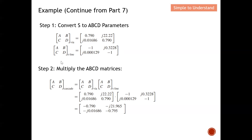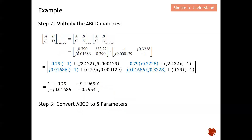In this video, I'm going to continue with Step 2, which is to multiply the ABCD parameters. I have the via and the transmission line, and to calculate the overall cascade circuit, I need to multiply the 2×2 matrix of the via by the 2×2 matrix of the transmission line. To get the A term: 0.79 multiplied by minus 1, plus j22.22 multiplied by j0.00129 — this gives the overall cascade A term.